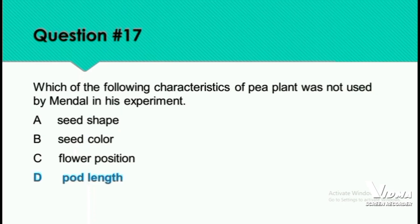Question 17: Which of the following characteristics of the pea plant was not used by Mendel in his experiment? We know Mendel is the father of genetics and studied the pea plant. He studied seed shape, seed color, and flower position, but he did not study pore length. Option D is the right answer.